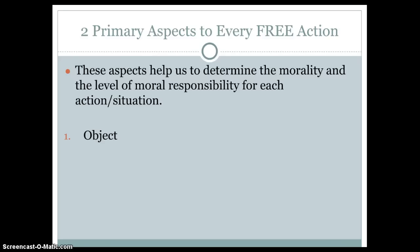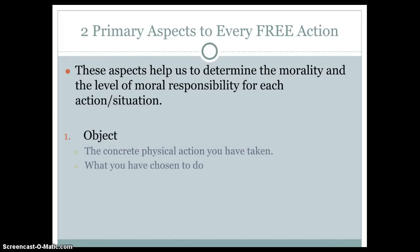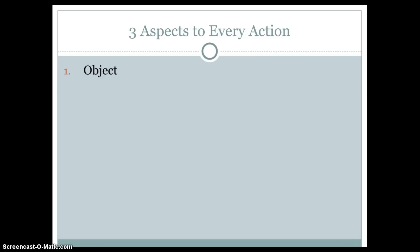The first part of any action is the object. The object is always the thing that is actually being done. So if I were to go steal a piece of gum from my friend, my object would be stealing the piece of gum. Whenever I ask you to identify the object, you're simply looking for what you have chosen to do. Another example: you went to Sacred Heart to work in the clothes closet — your object in that scenario is working at Sacred Heart.